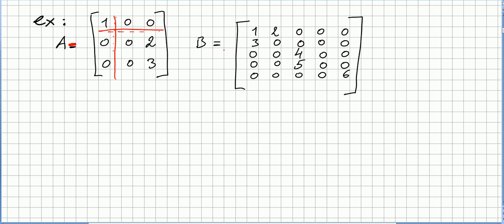Now suppose we have another matrix B, and we are asked the same thing: partition B so that it becomes a block diagonal matrix with as many diagonal blocks as possible. So we partition here and here. We get a two by two block, another two by two block, and a one by one block, with all the off-diagonal blocks being zero. Okay.